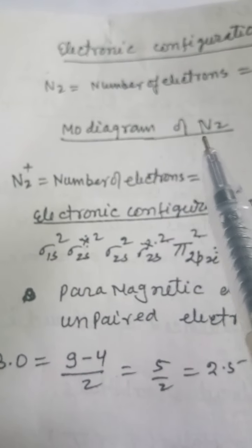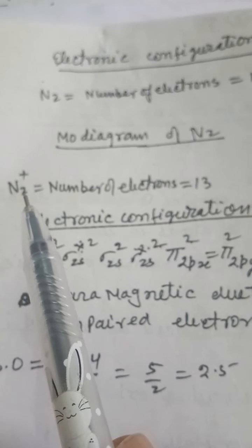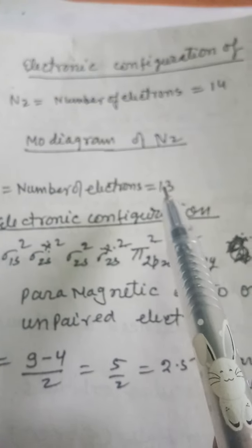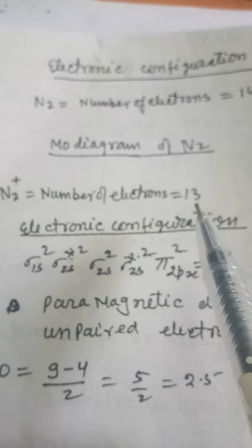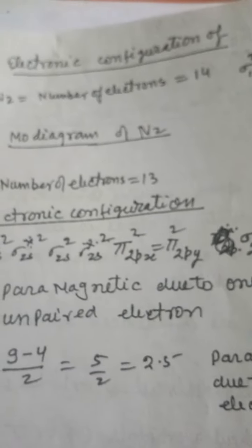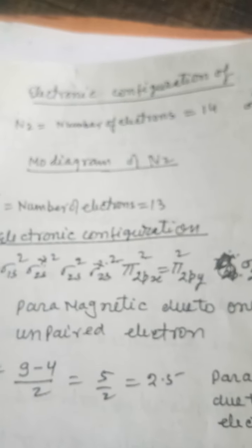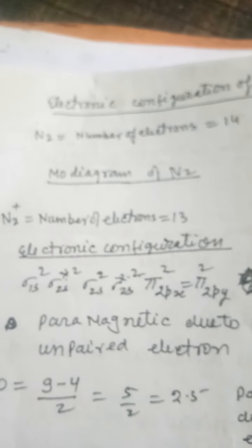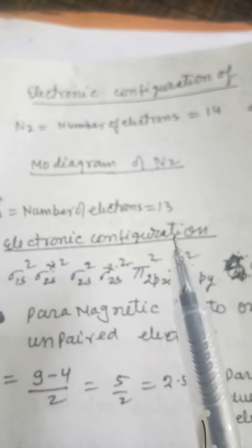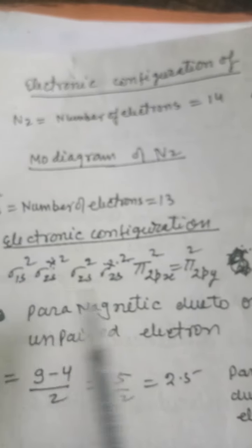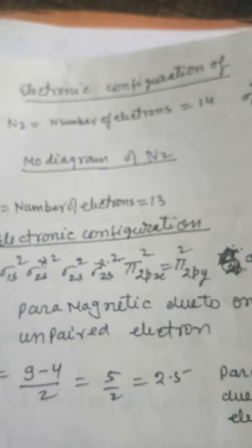Now consider the nitrogen molecule ion: suppose one electron is removed from the nitrogen molecule. If one electron is removed, the N₂⁺ ion has 13 electrons. These 13 electrons are distributed in different molecular orbitals. The order of molecular orbitals from hydrogen up to nitrogen remains the same — this order holds for up to 14 electrons.